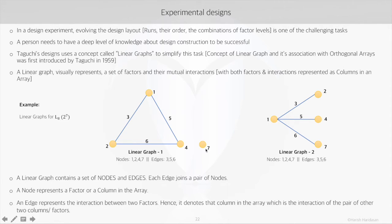they represent the main factors, while these edges 3, 5 and 6, they represent the interaction between the main factors. Like this edge 3 shows the interaction between the factor 1 and 2. This is the interaction between factor 1 and 4.